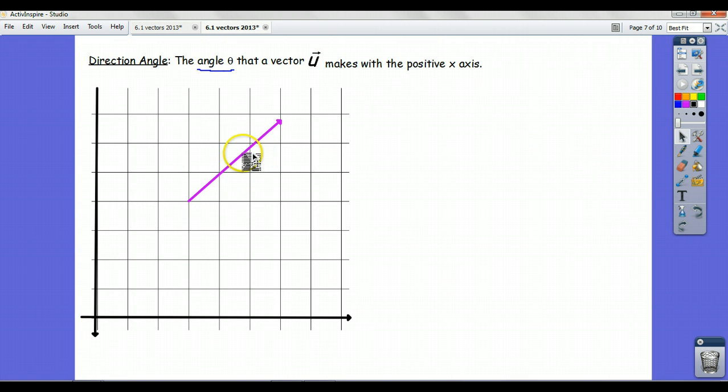Here's a vector, let's call this vector u. It's sort of out here in no man's land. If I want to know the direction angle of this vector, I'm going to situate it on the positive x-axis. All these vectors that I'm moving around, remember, they're all the same.